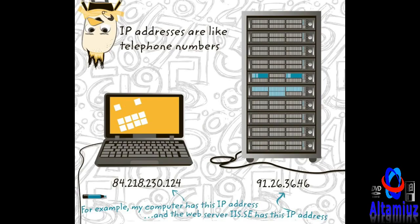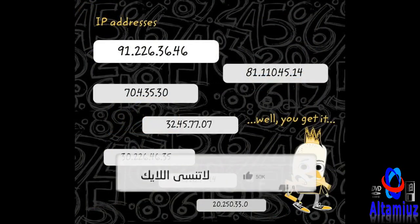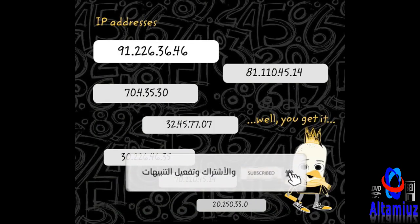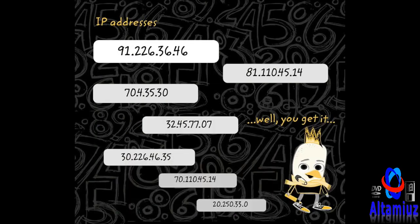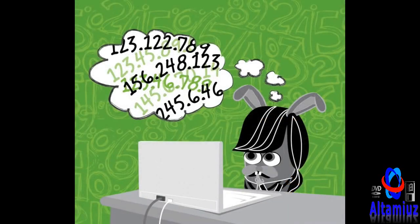IP addresses are like telephone numbers. Do you remember that computers on the internet talk with numbers and codes? An address to a computer that is connected to the internet can look like this. The number addresses on the internet are called IP addresses. IP addresses are quite long — it can be 91.226.36.46. Complicated, right? You can't read and remember so many numbers and points.